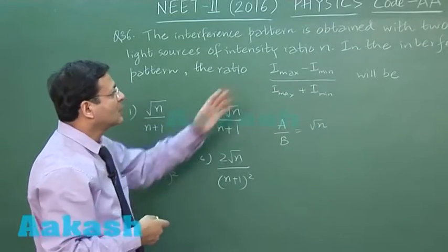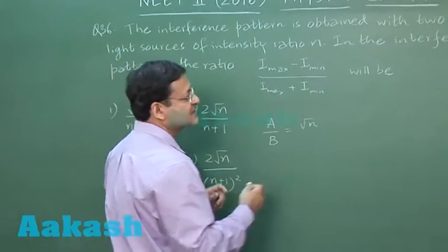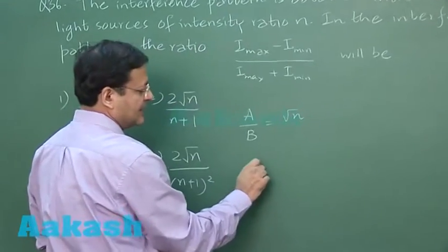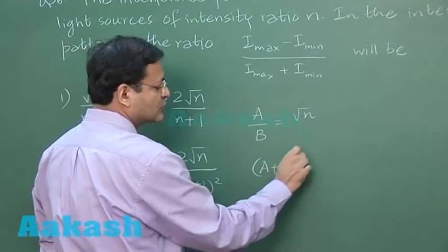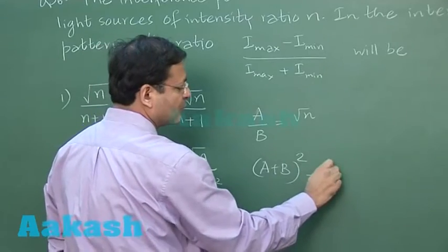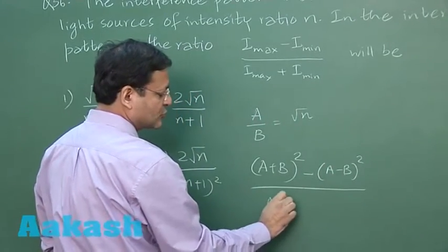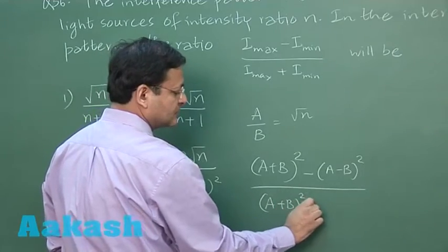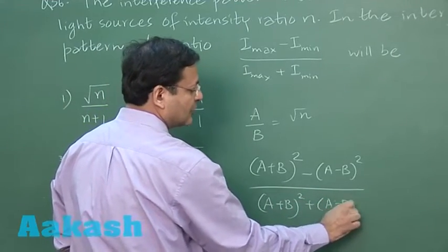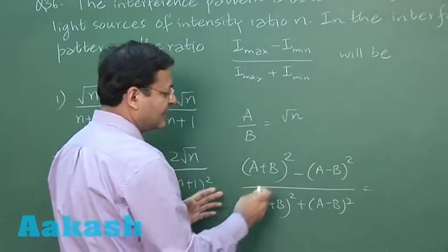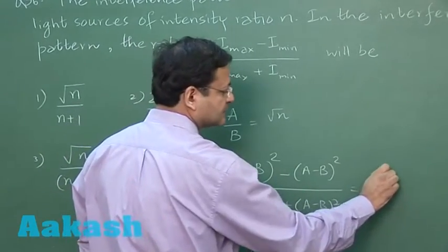Now, what is I_max? I_max is simply proportional to (a+b)² and I_min proportional to (a-b)². The ratio is (a+b)²/(a-b)² divided by (a+b)² plus (a-b)².